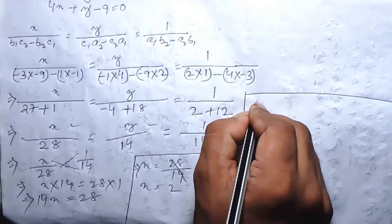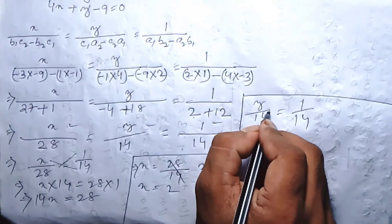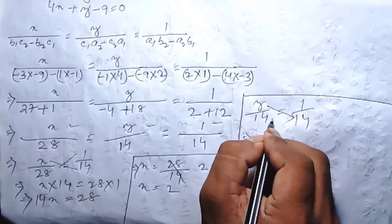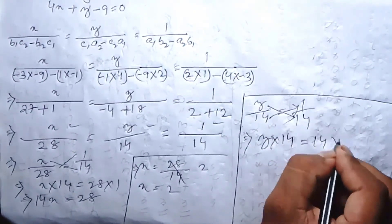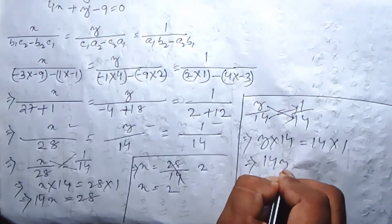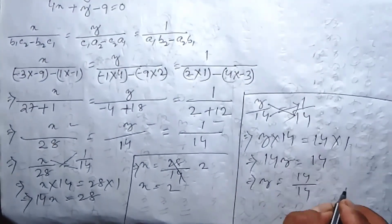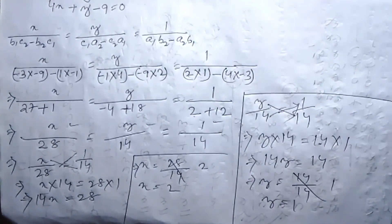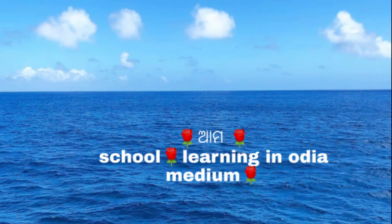For Y: y by 14 equal 1 by 14, so y into 14 equal 14 into 1, giving 14 y equal 14, therefore y equal 14 by 14, so y equal 1. This completes the basic concept example of solving using the cross-multiplication method.